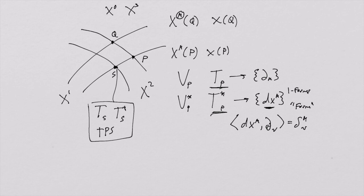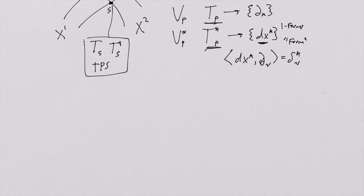The reason we use the word tangent is that the vectors that are members of the tangent space are these differential operators, and they do a good job of expressing tangency, because that's what derivatives do in a lot of ways. So we speculate on the existence of a function on spacetime, and an element—say a differential operator—that is an element of the tangent space, which can be expressed as a-mu del-mu.